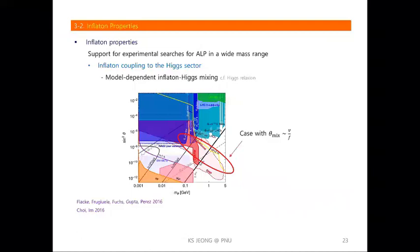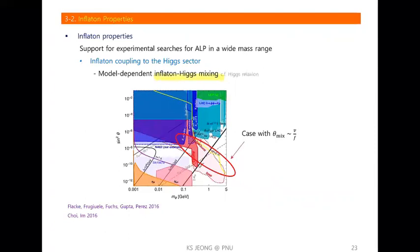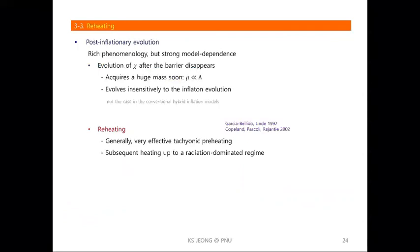Another interesting possibility is that the inflaton couples to the Standard Model only through the Higgs portal, like the cosmological relaxation model. In this case the inflaton mixes with the Higgs boson and depending on the Higgs mixing angle there are various experimental searches. The post-inflation evolution of our scenario has very rich phenomenology, though the quantitative features depend strongly on the model.